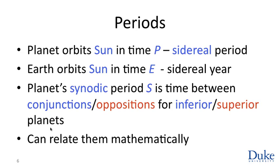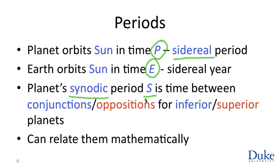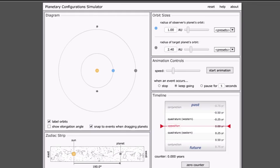We can do a nice calculation to get a handle on this racetrack story. Imagine all planets orbiting the Sun. Take some planet and let P be the time it takes to complete one circuit around the Sun relative to the stars — we'll call that its sidereal period. Earth itself is a planet with its own period E, exactly the sidereal year. We also define a synodic period S: the time between consecutive occurrences of a particular alignment between the Earth, the planet in question, and the Sun — just as with the lunar phases. We're going to relate these mathematically using this racetrack model.